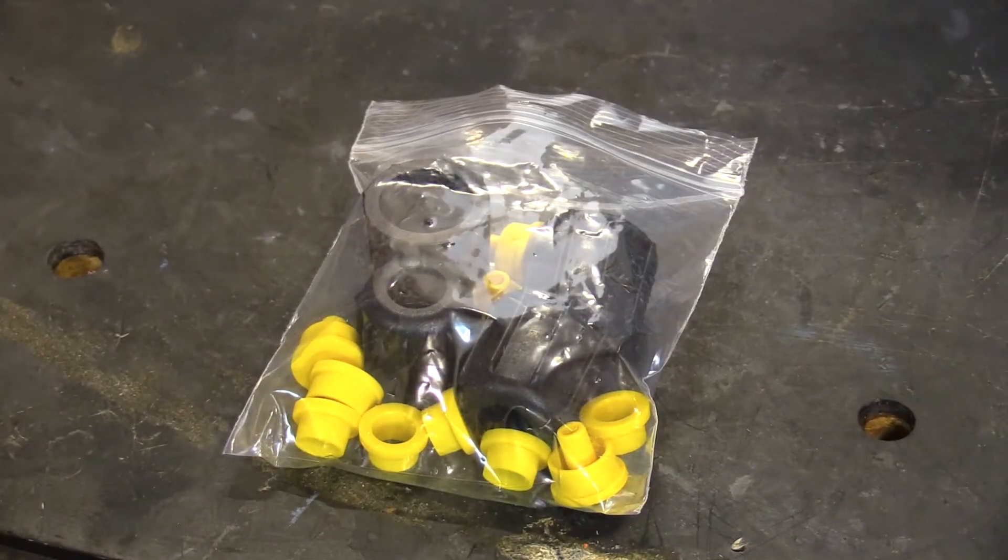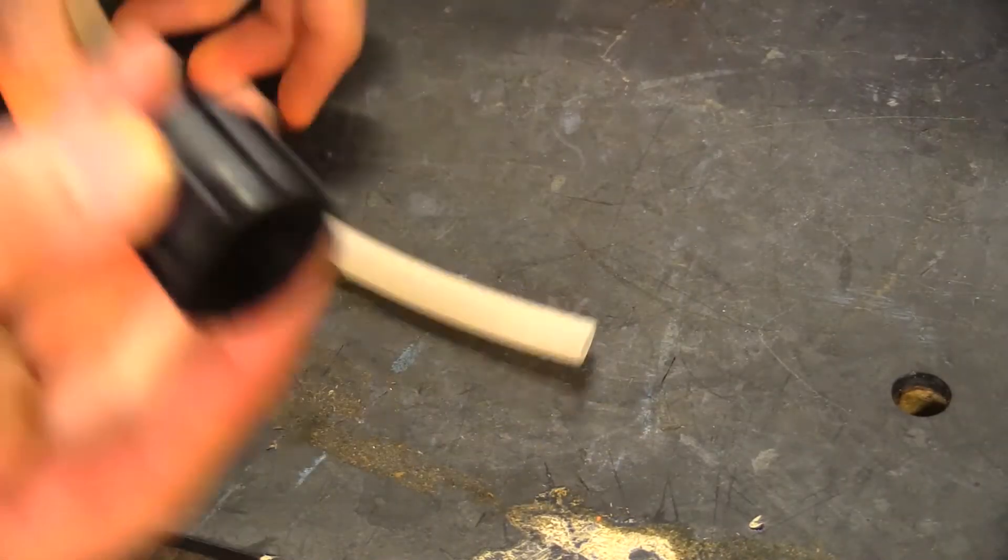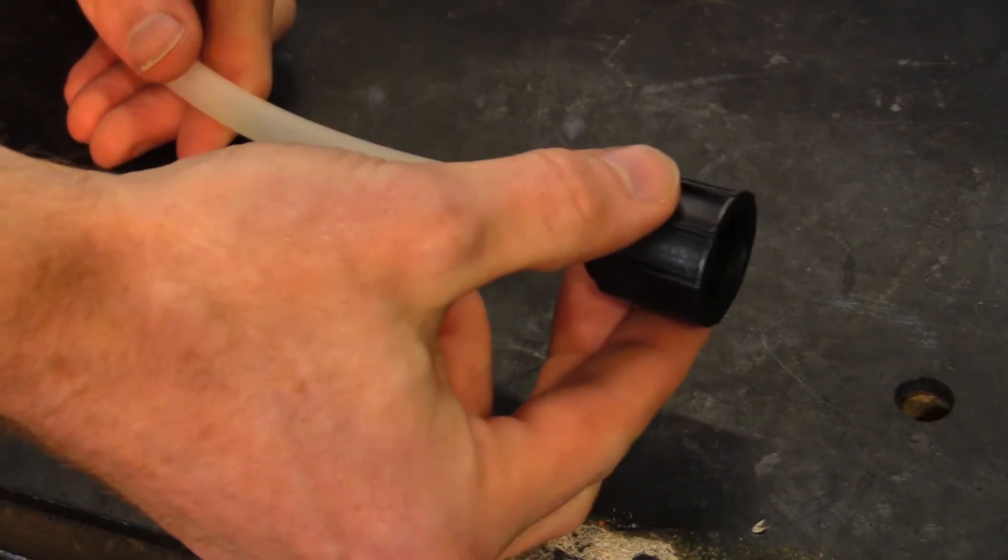Now you'll want to install the new ferrules. We'll start with 3/8 tubing. Insert the tubing through the coupling nut.